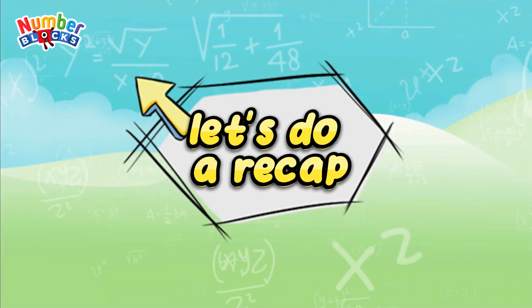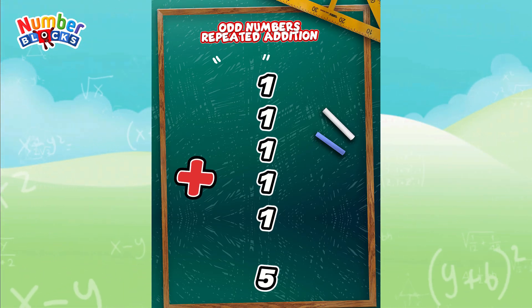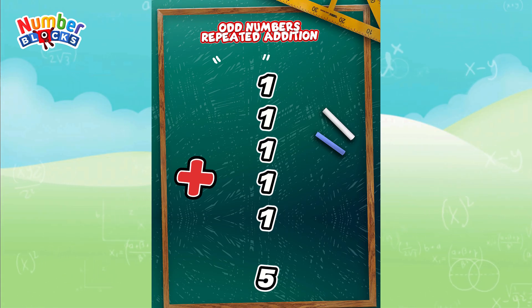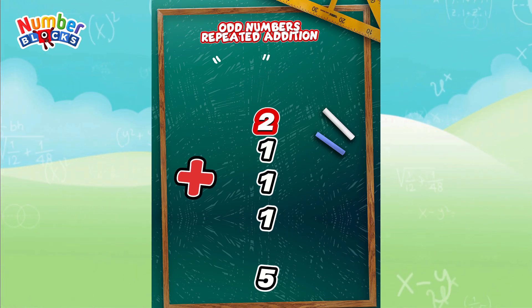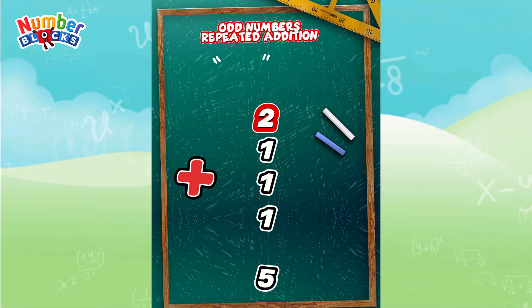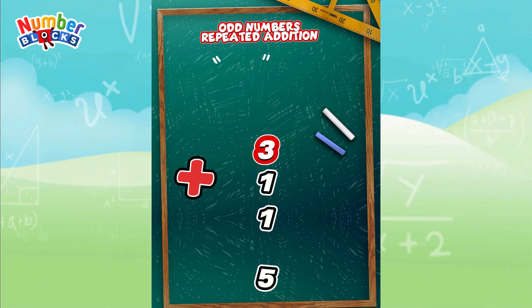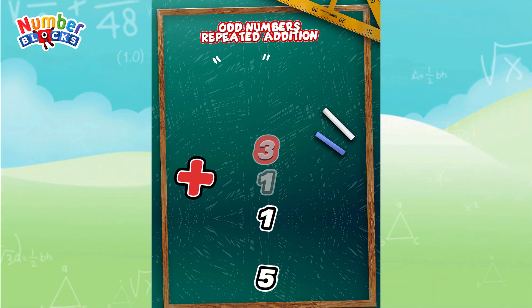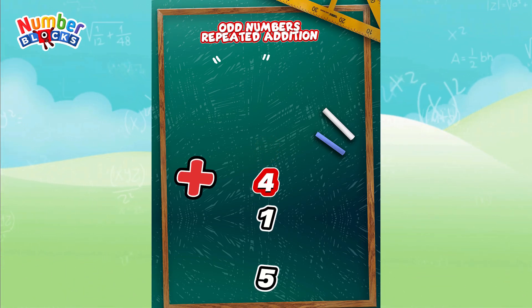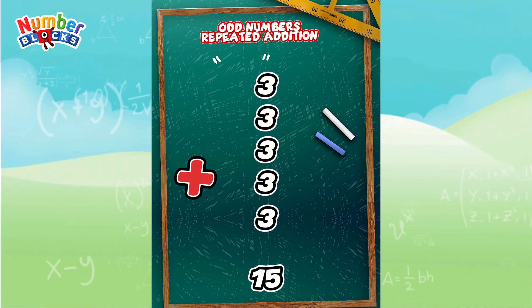Let's do a recap. Let's try at numbers, repeated addition. 1 plus 1 is equals to 2. 2 plus 1 is equals to 3. 3 plus 1 is equals to 4. 4 plus 1 is equals to 5.